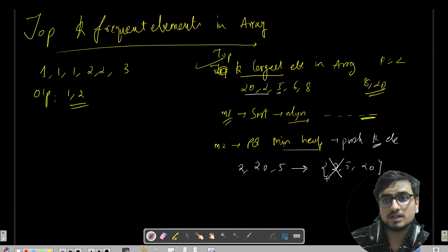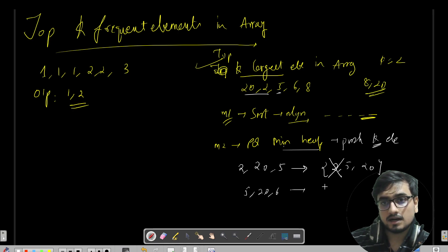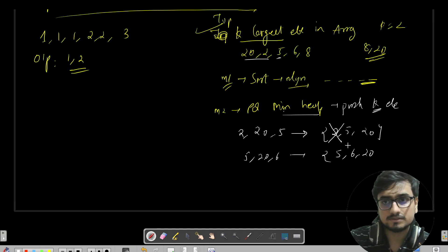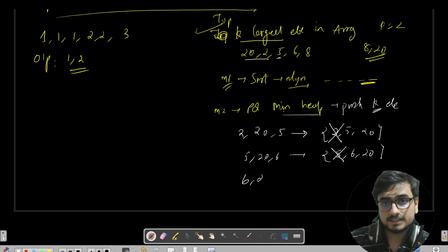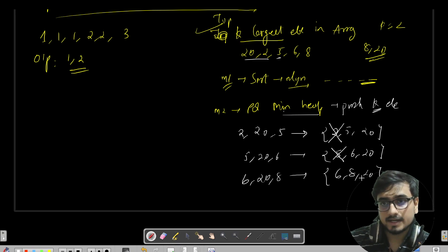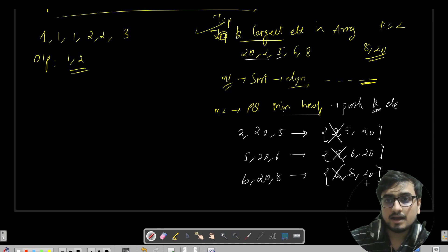After polling, 5 and 20 remain. Then 6 is added, so the PQ looks like 5, 6, 20. We call pq.poll() again, removing 5. Next element 8 is added, making it 6, 8, 20. We poll again, removing 6. The final elements in the PQ — 8 and 20 — are your answer.